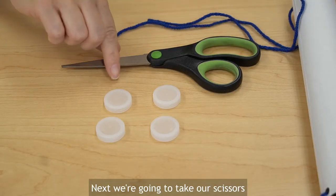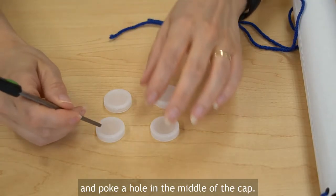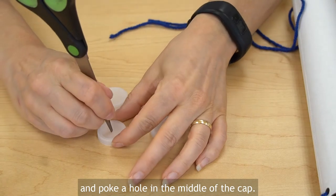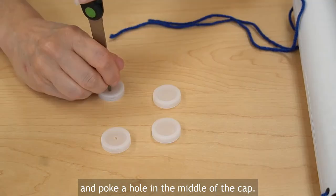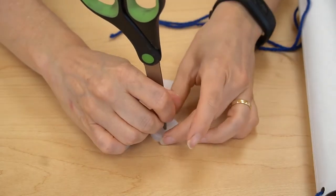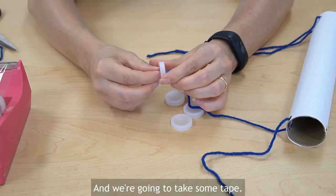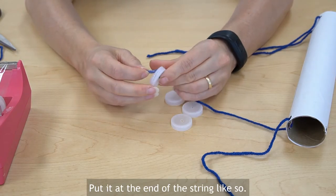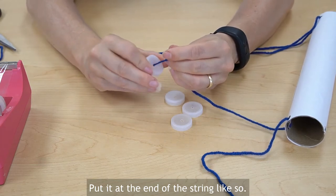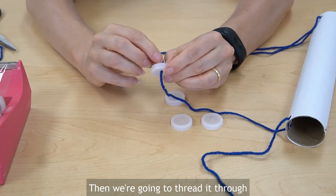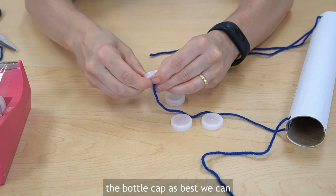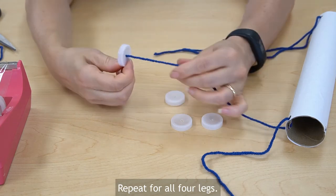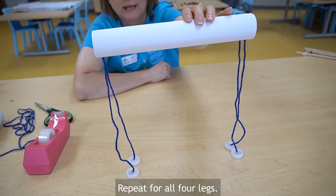Next we're going to take our scissors and poke a hole in the middle of the cap. And we're going to take some tape, put it at the end of the string like so and then we're going to thread it through the bottle cap as best we can. Repeat for all four legs.